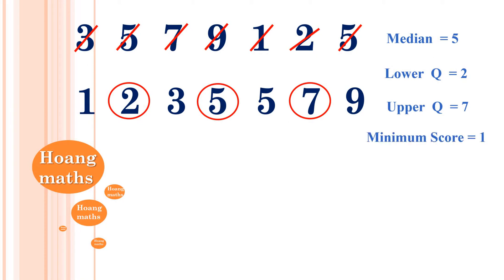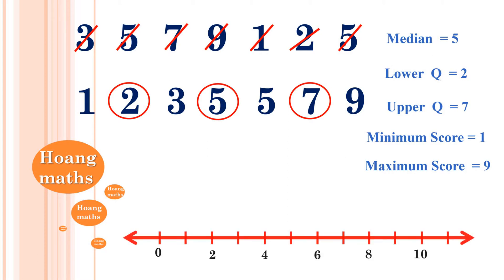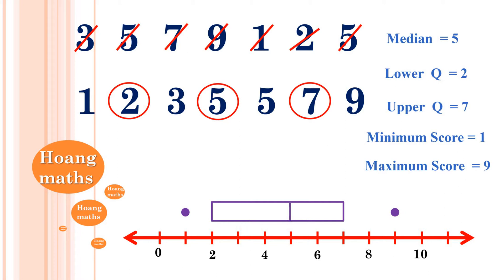The minimum score is 1 and the maximum score is 9. Now we can put that in a box plot. We draw a number line from 0 to 10. We place the minimum at 1 and maximum at 9, then mark the lower quartile at 2 and upper quartile at 7, draw the box, and mark the median at 5. Finally, we connect the minimum and maximum to the box with whiskers.